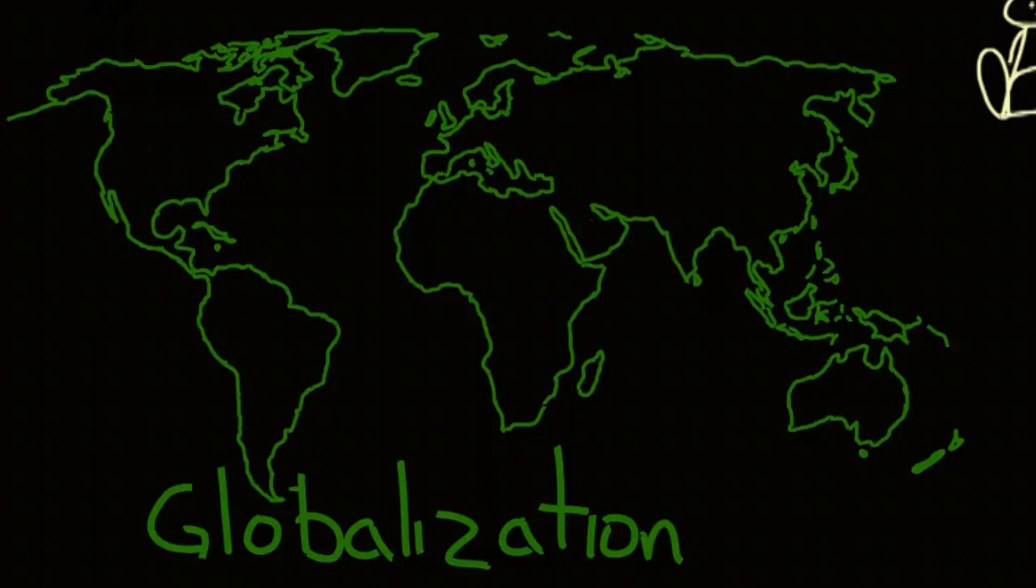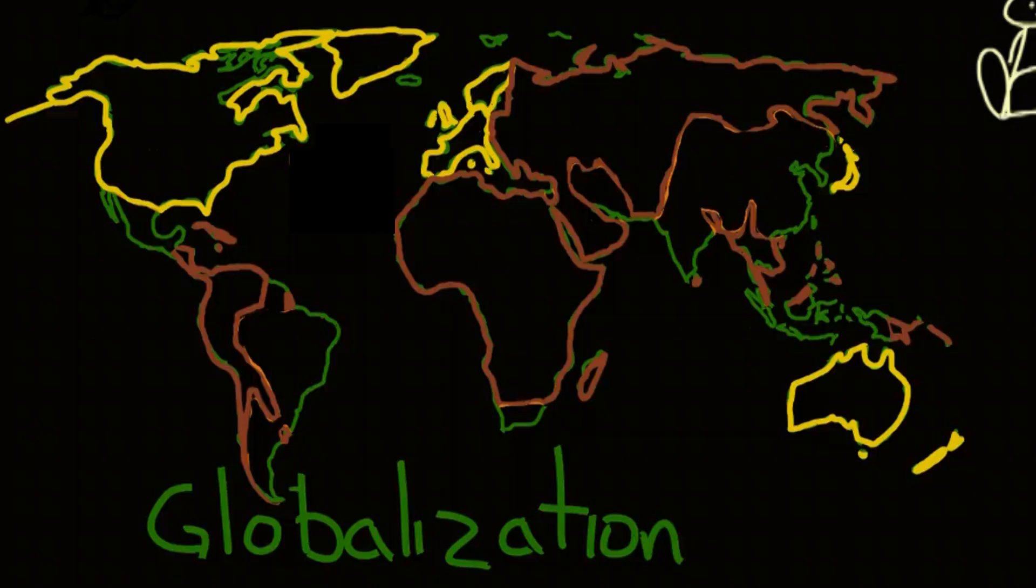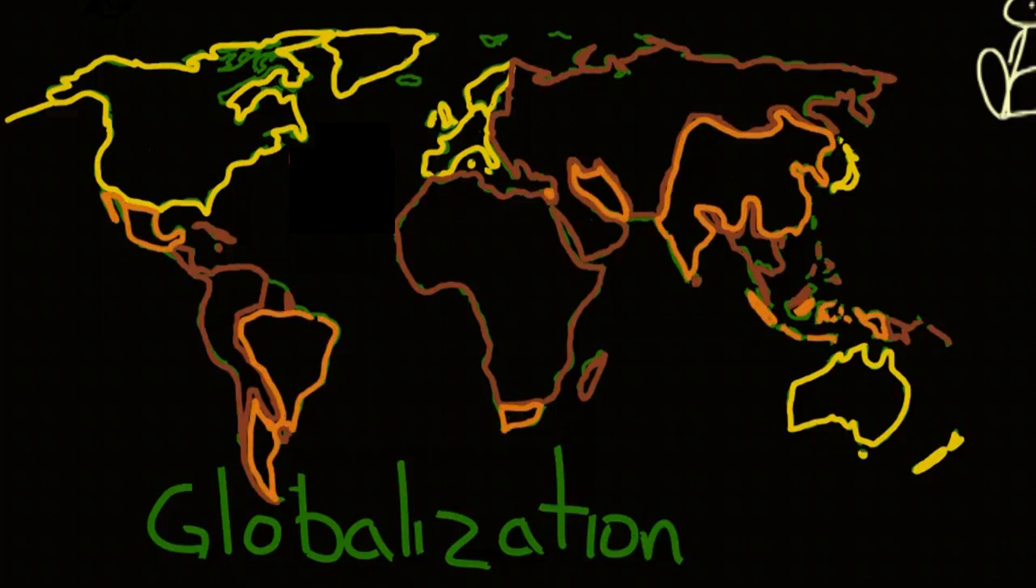There are many theories of globalization. World systems theory states that the world is a single social unit divided into three regions: core countries, which are industrialized and relatively independent of outside control; periphery countries, which are greatly influenced by core nations and transnational corporations and depend on one type of economic activity; and semi-periphery countries, which are the middle ground between core and periphery, consisting of either declining core countries or rising periphery countries.